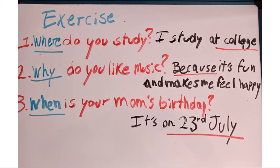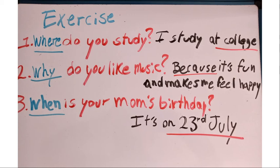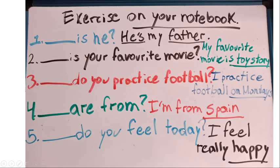Here are the correct answers. Number one: 'where,' because college is a place — 'Where do you study?' Number two: 'why,' because we want to know the reason — 'Why do you like music?' and 'because' gives the reason. Number three: 'when,' because we want to know the day — 'When is your mom's birthday?' The answer includes the date: 23rd of July.